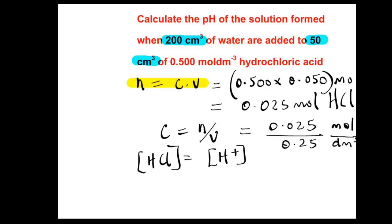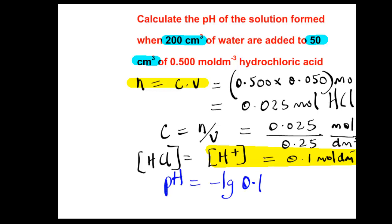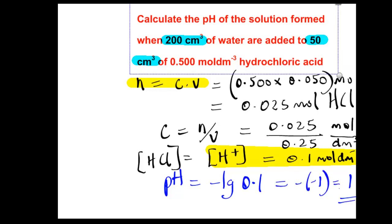Since HCl is a monobasic acid, one mole of HCl produces one mole of hydrogen ions, so the concentration of hydrogen ions is 0.1 mole per cubic decimetre, or 0.1 molar. The pH is the negative log of 0.1. Since 0.1 equals 10 to the power of minus 1, the log is minus 1, and the negative log gives minus minus 1 — which is 1. So the pH is 1.